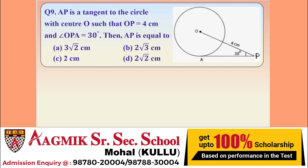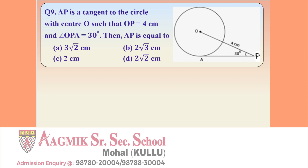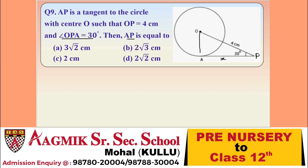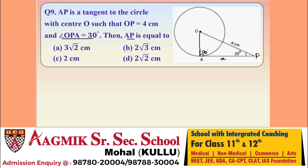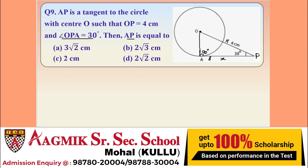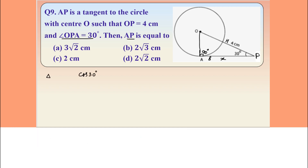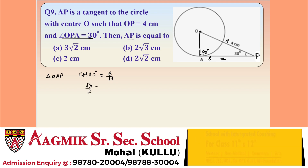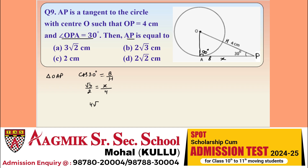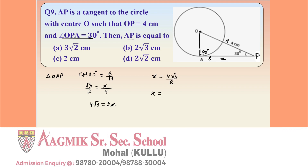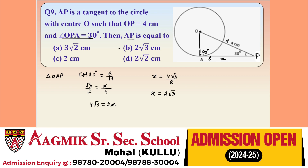Question 9: AP is a tangent to the circle with center O such that OP = 4, and angle OPA = 30°. Find AP. OA is the radius and is perpendicular to the tangent at the point of contact. In triangle OAP, cos 30° = AP/OP = √3/2 = X/4. So 4√3 = 2X, giving X = AP = 2√3. Option B is correct.